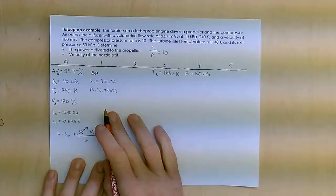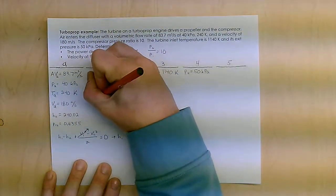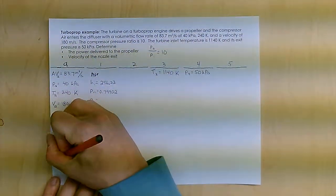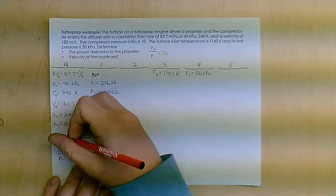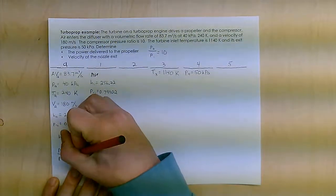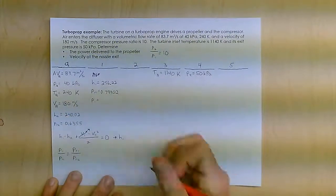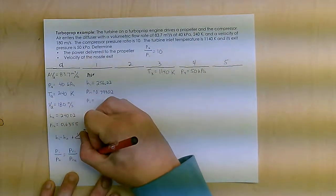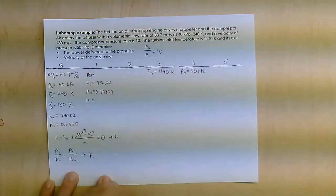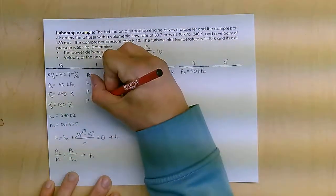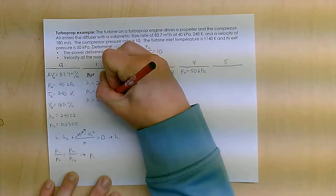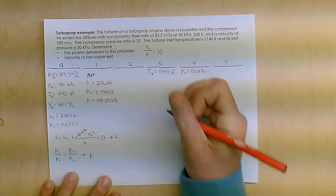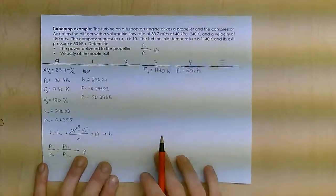Now that I have that, I can actually calculate P1 going into the compressor. I do that by P1 over PA equals PR1 over PRA. And knowing those relative pressures, knowing PA, I can find P1, and I get P1 equals to 50.29 kilopascal. So that sets state one.